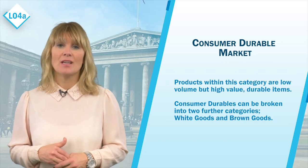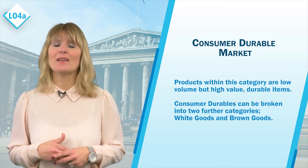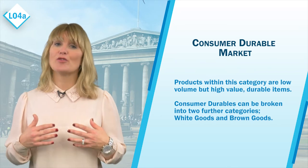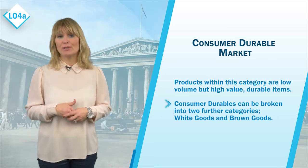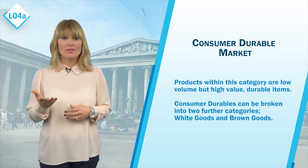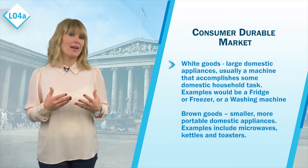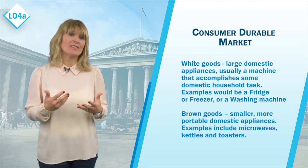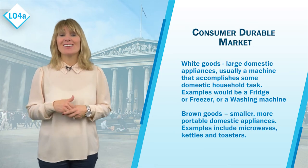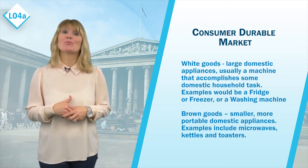The next category of consumer market is the consumer durable market. Products within this category are low volume, high value items. The term 'durable' is generally applied to these items as they will sit on the shelves for a much longer period of time than FMCGs. Consumer durables can be broken down into two further categories: white goods and brown goods. White goods are large domestic appliances — usually a machine that accomplishes some domestic household task — for example, a fridge, a freezer, or a washing machine.